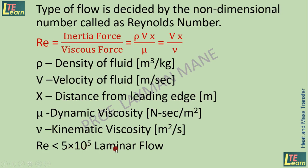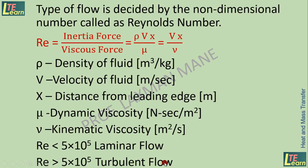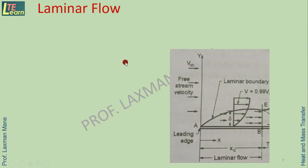When the Reynolds number is less than 5×10⁵, the flow is laminar. When it is greater than 5×10⁵, the flow is turbulent. Between these two values is the transition zone. In the laminar zone, layers of fluid are parallel to each other — no layers cross — which is why the type of flow is laminar and the boundary layer is a laminar boundary layer.